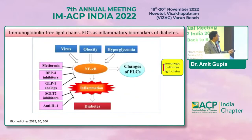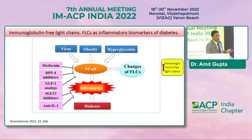Various drug classes are available: viruses like COVID-19, obesity, and hyperglycemia drive inflammation and diabetes, but metformin, DPP-4 inhibitors, GLP-1 analogs, SGLT-2 inhibitors, and IL-1 therapy can target inflammation. One molecule used in India is hydroxychloroquine, approved by DCGI for use in patients with type 2 diabetes — with certain caveats — to help reduce inflammation.